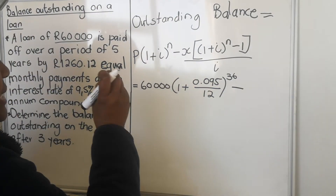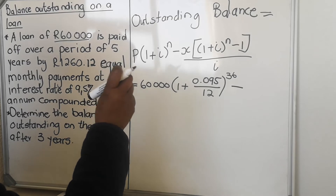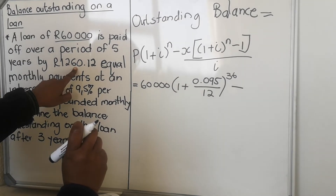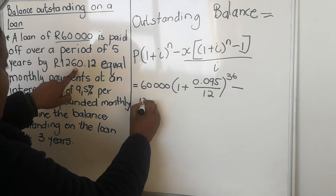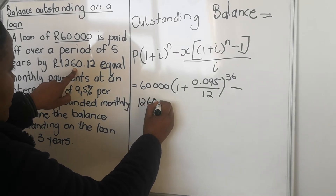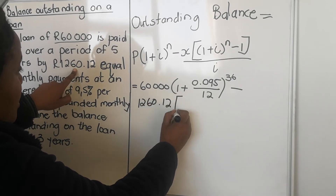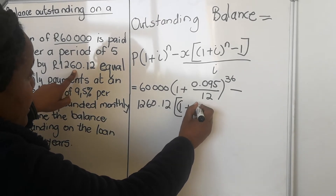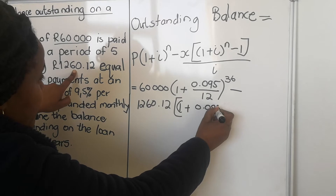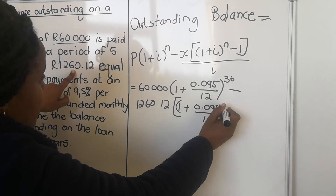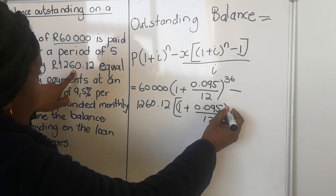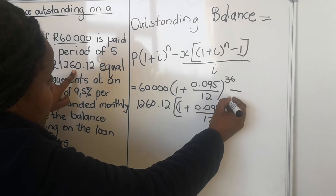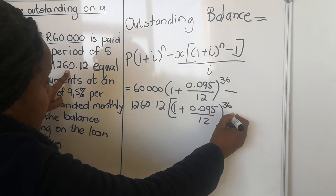Minus your future value part: x is the monthly payment amount, which is R12,600. Then you have one plus the interest rate 0.095 divided by 12, and the same n of 36, minus one — all divided by the interest rate.